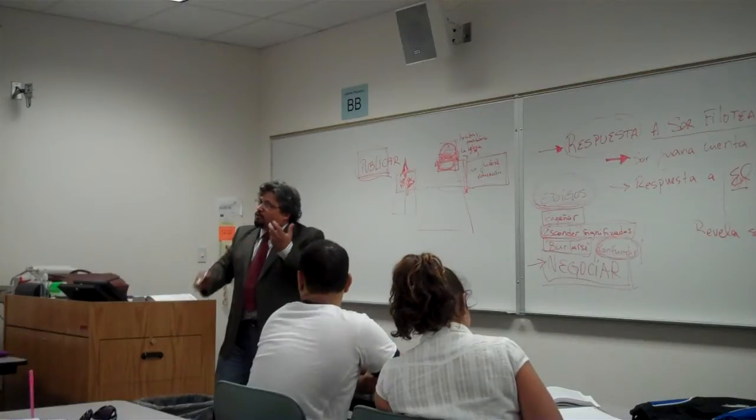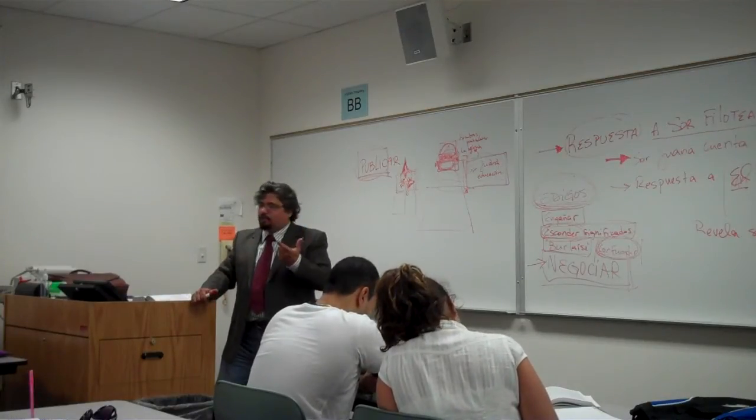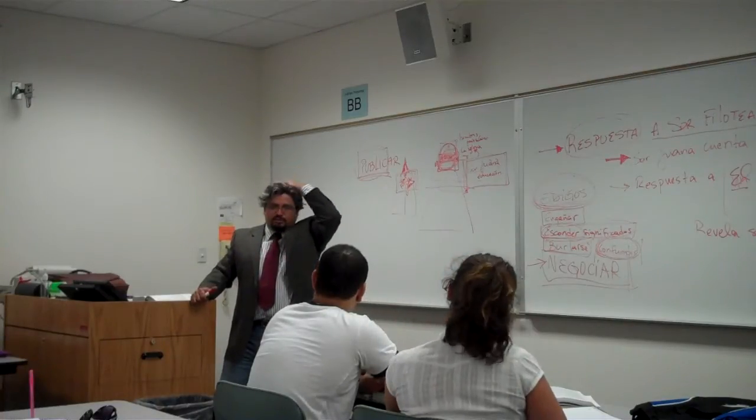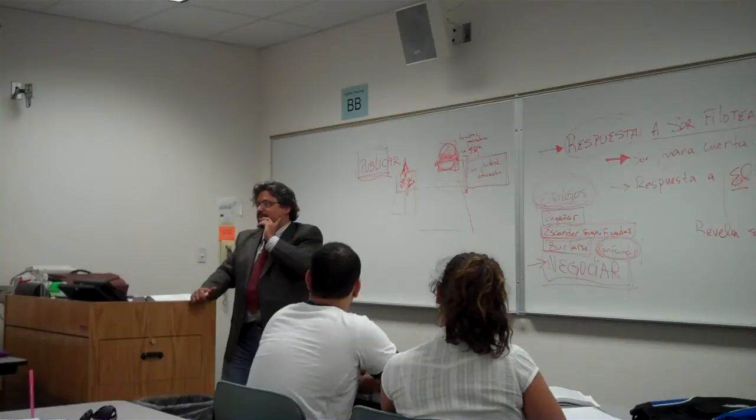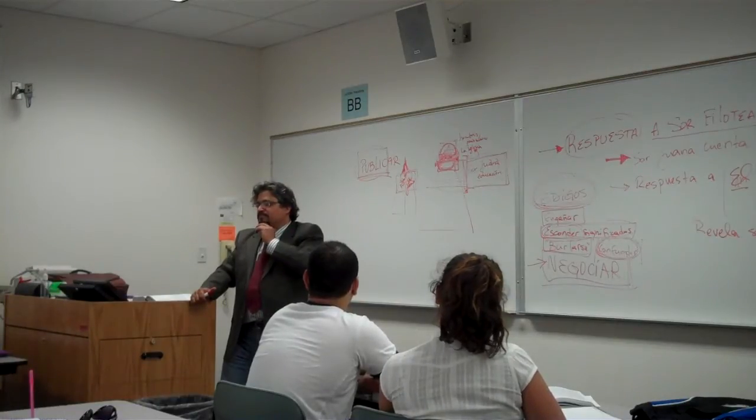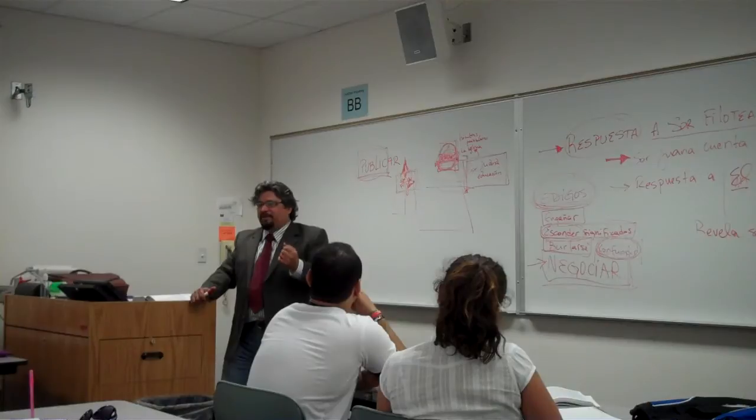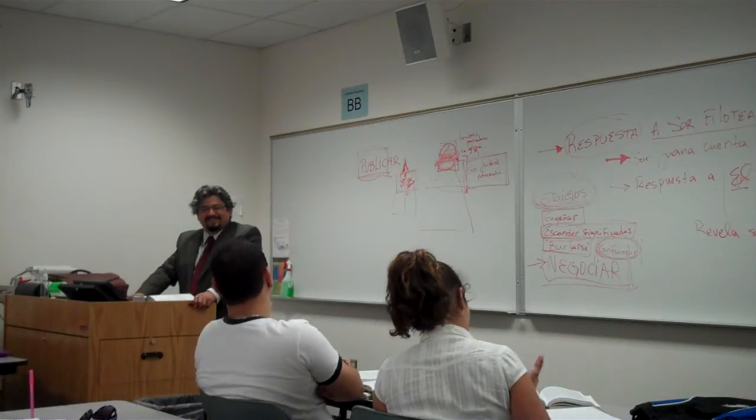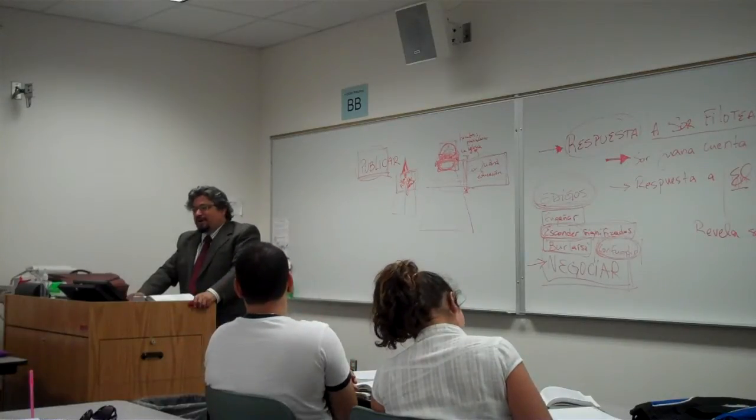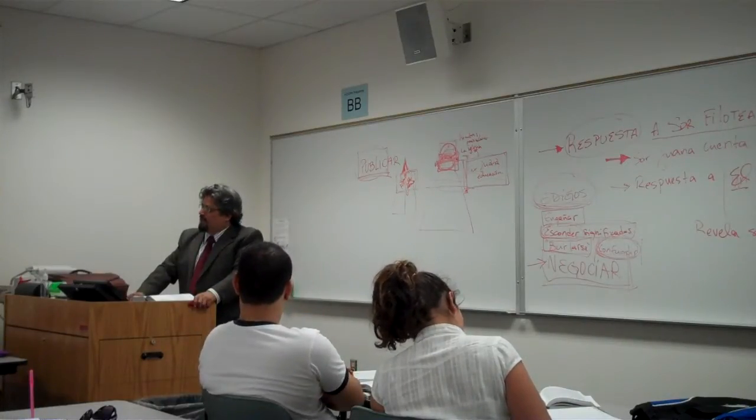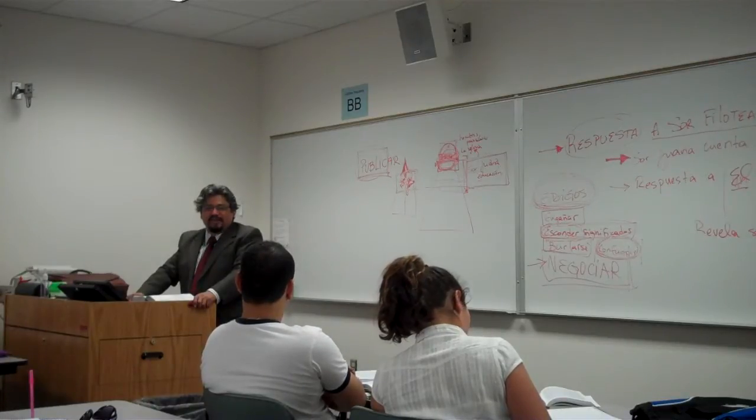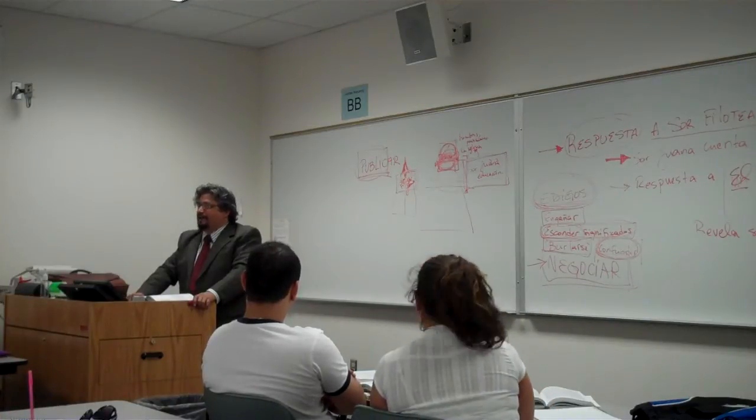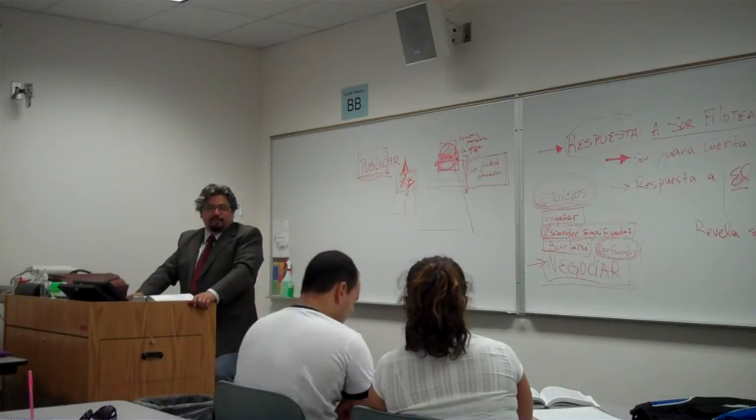Cuando usamos sarcasmo o usamos ironía, esperamos que la otra persona entienda que usamos sarcasmo o ironía, por lo general. Si yo estoy siendo sarcástico, quiero que la persona lo sepa por el tono o por la manera que... Usamos un tono o usamos una manera de expresar las cosas que hacen que creamos que la otra persona va a entender que estamos haciendo una gracia.